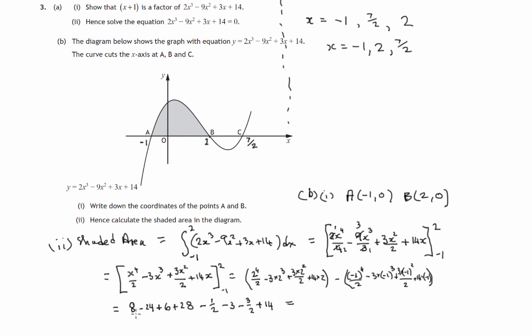Let's look at all the positive terms. 8 and 6 is 14, plus 28 is 42, plus 14 is 56.